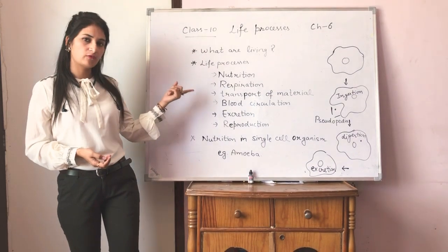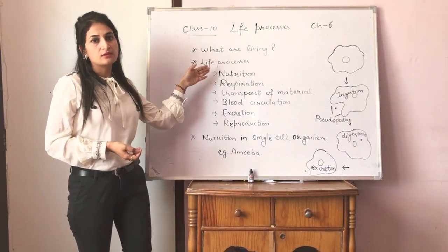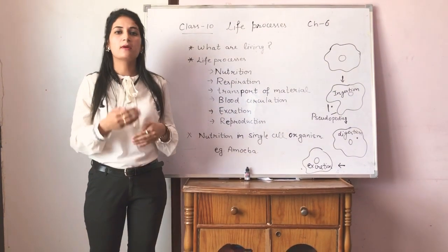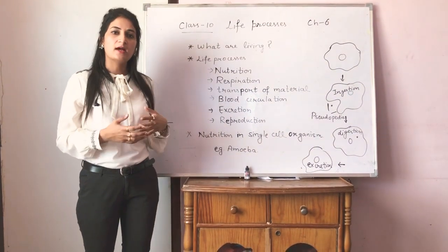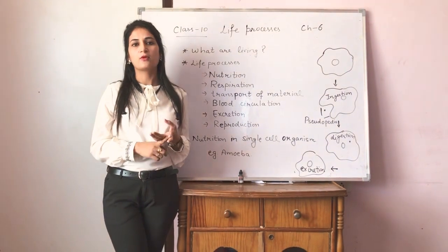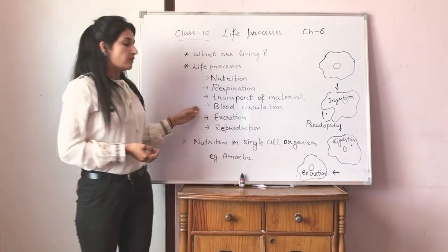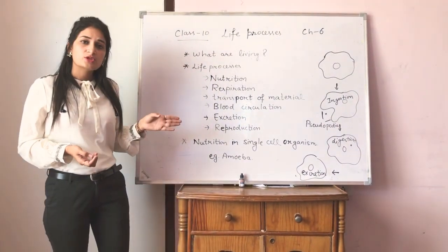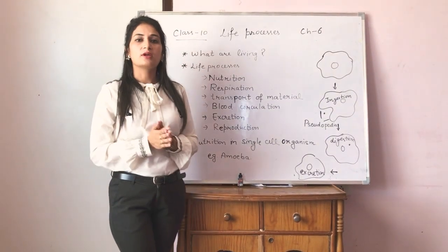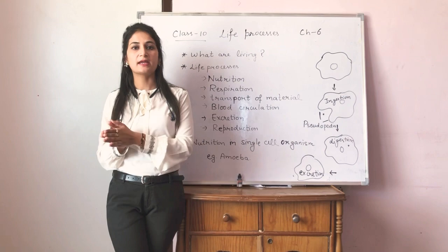Next is transport of material. The material that you take in through nutrition is transported to the whole body with the help of blood in humans and other organisms, and with the help of water in plants. Blood circulation is the circulation of blood in the body with the help of blood vessels and the heart.